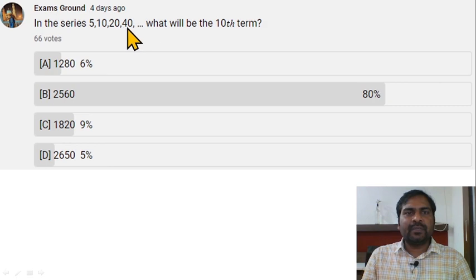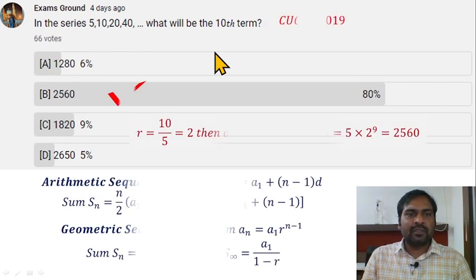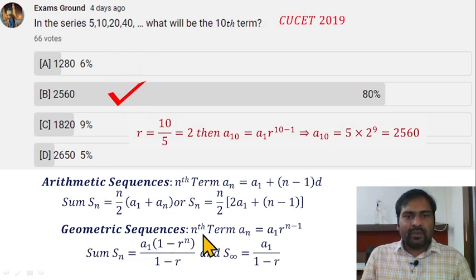In the series 5, 10, 20, 40, what will be the tenth term? It is a geometric sequence, so the nth term for a geometric sequence an = a1 × r^(n-1). Ratio r = 2, then the tenth term = a1 × r^9. a1 = 5, starting from 5, then a1 = 5 × 2^9, and the answer is 2,560.